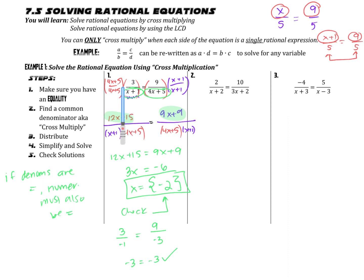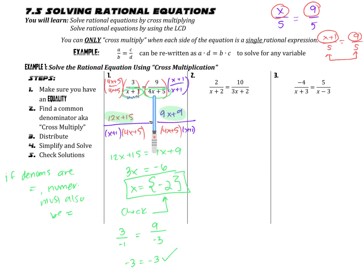Since we had one fraction equal to one fraction, multiplying by the common denominator is really the same thing as cross-multiplying. So multiplying 9 by (x+1) and multiplying 3 by (4x+5) — that's what we really did. The reason that shortcut works is because you're finding a common denominator and then dropping it, since once denominators are equal, numerators must be equal. You can skip showing the common denominator work if you think of it as cross-multiplying, but you must have an equal sign and exactly one fraction equal to another fraction — otherwise that strategy doesn't work.